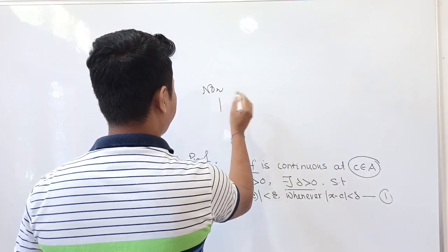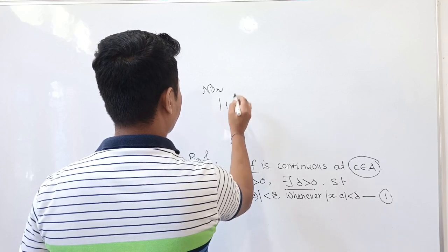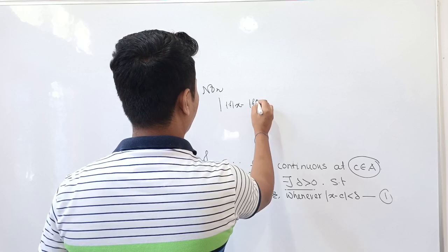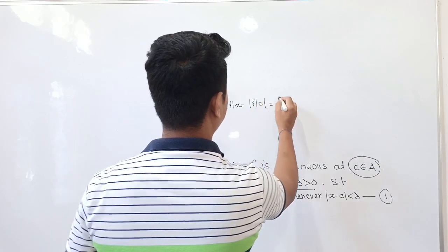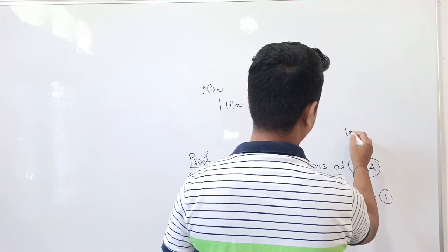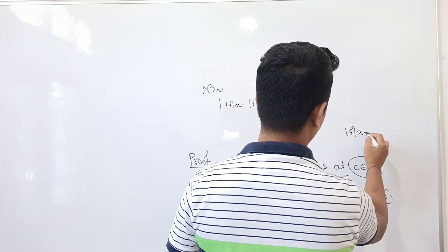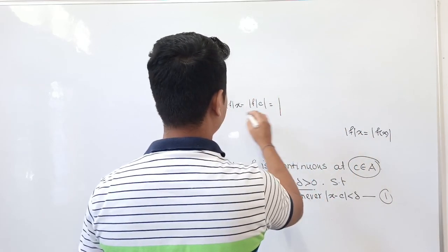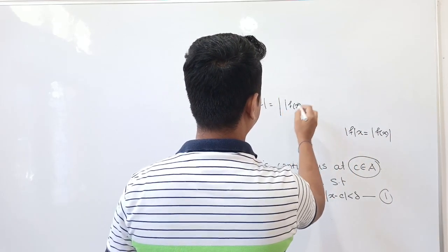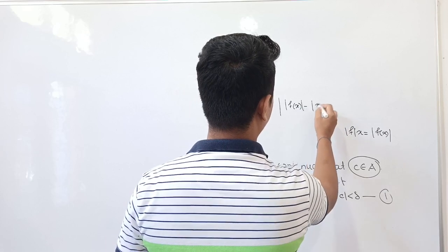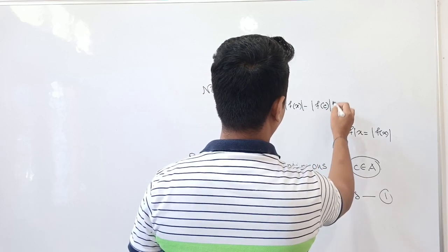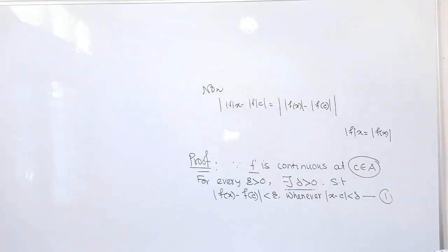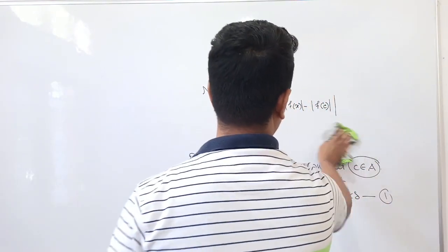Now, mod of mod f(x) minus mod f(c) — by using the given information that mod of f into x equals mod of f of x — this equals mod of mod of f of x minus mod of f of c. Now I am going to apply the inequality here.